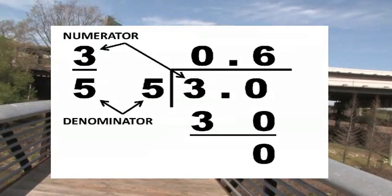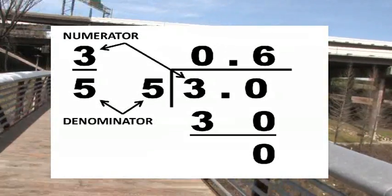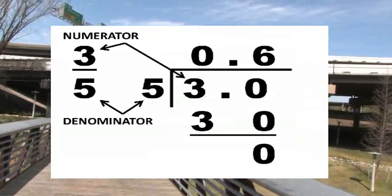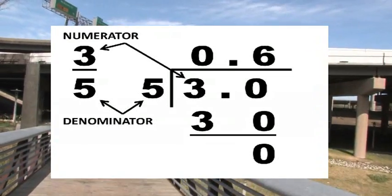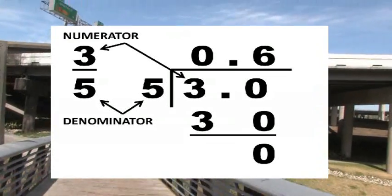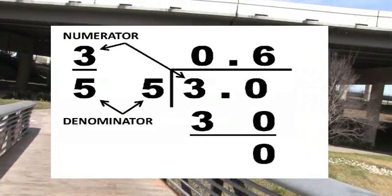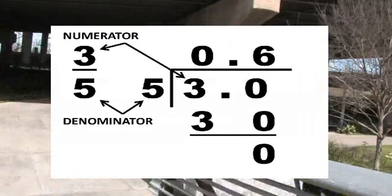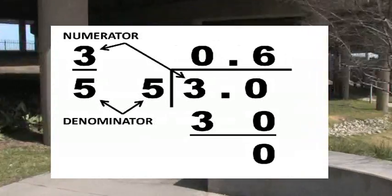This process is shown in the diagram. To convert 3 over 5 into a decimal, you take the denominator, 5, and divide it into the numerator, 3. 5 goes into 3 to give 0.6, or 6 tenths.